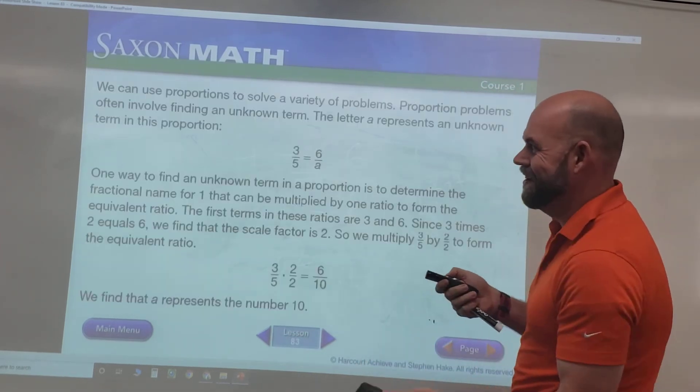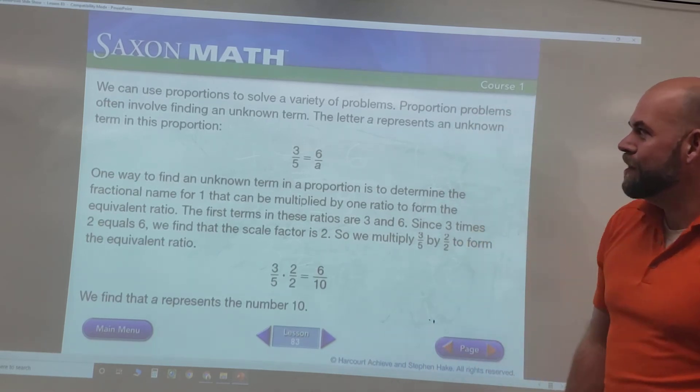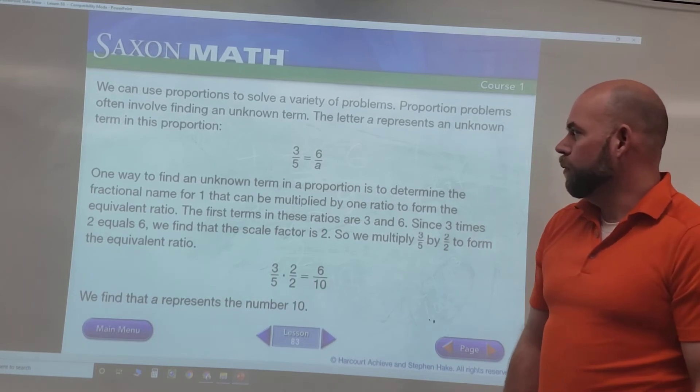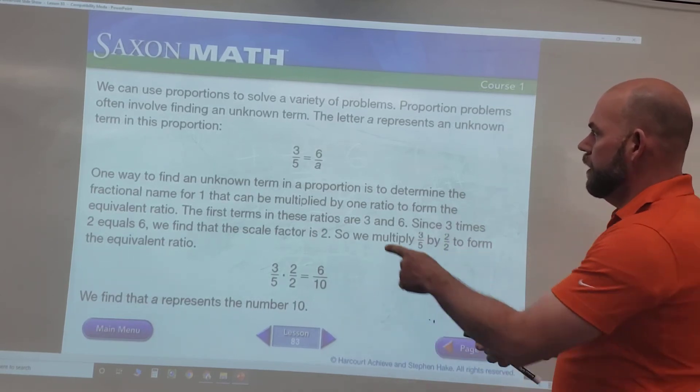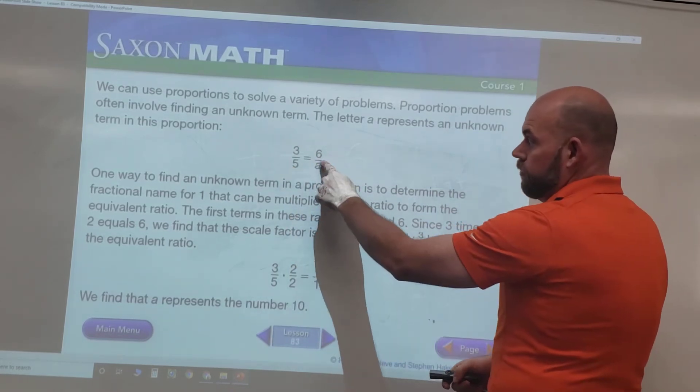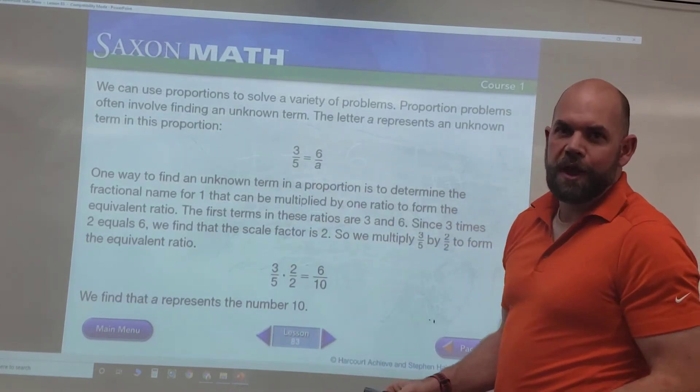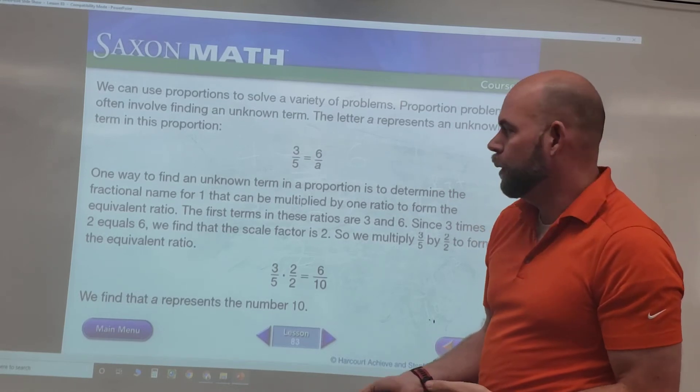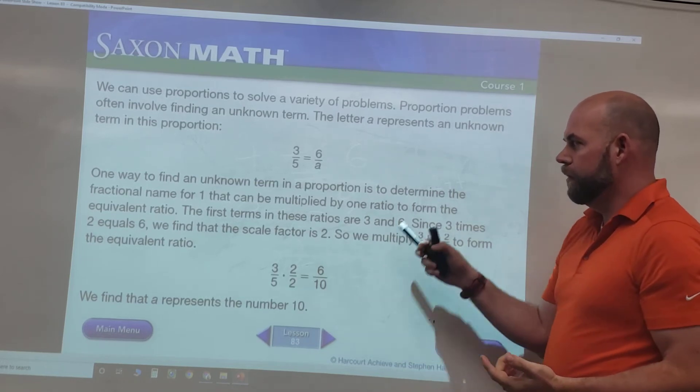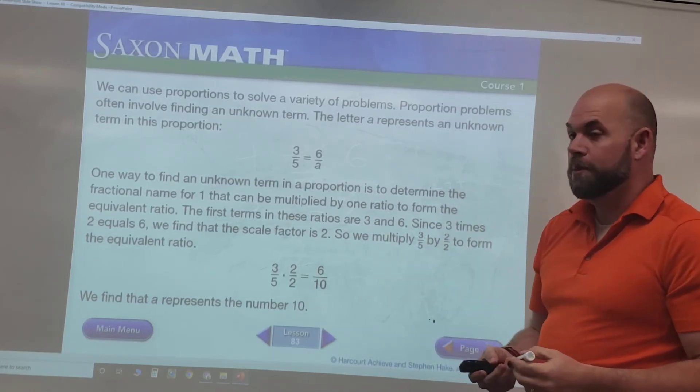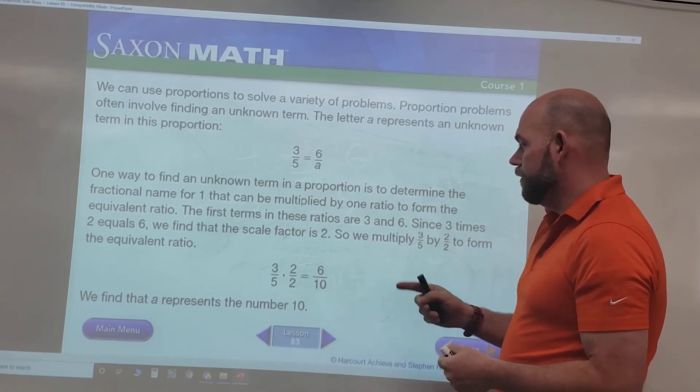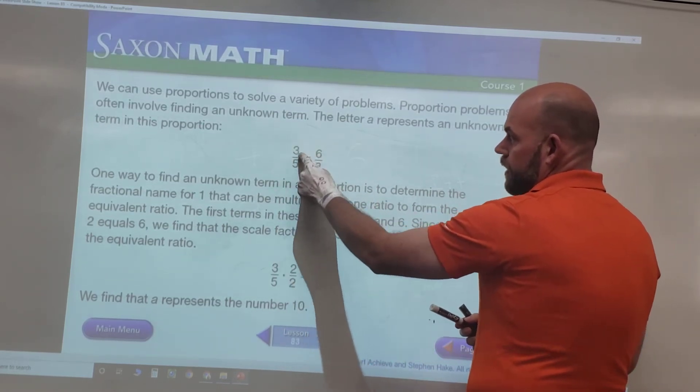So we're gonna go to our unknown. We can use proportions to solve a variety of problems with an unknown term. So here we'd say three is to five as six is to what. Now they're using - usually when we do algebra we use an X, but it really doesn't matter, it's just our unknown variable.